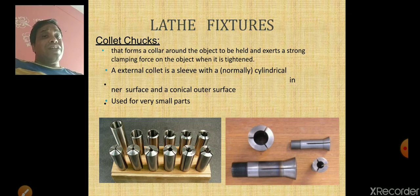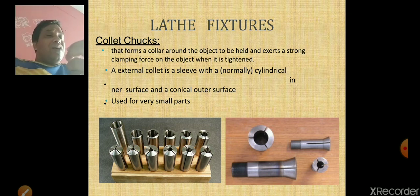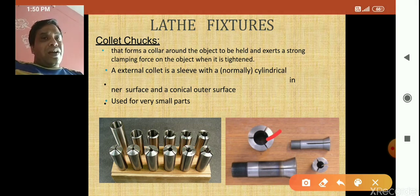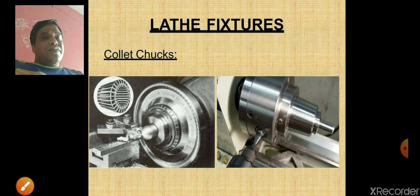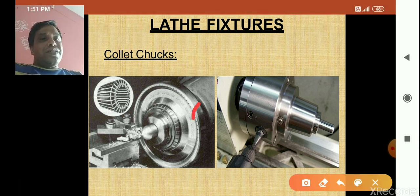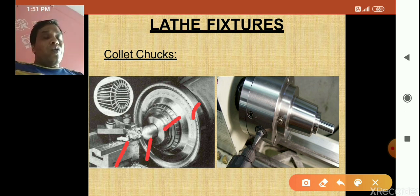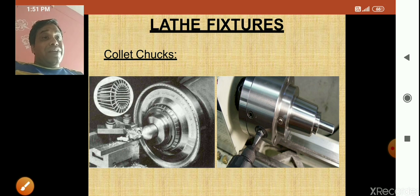Lathe fixtures also include collet chucks, which are used for very small parts that cannot be held between the chuck jaws. These small parts can be held in this collet. The collet chuck holds and locates the workpiece — that is why it is called a fixture.